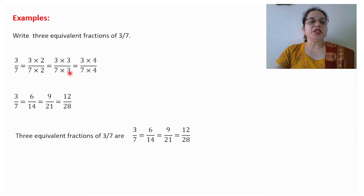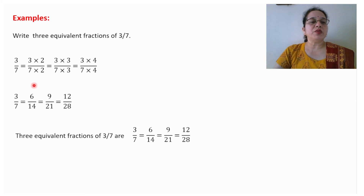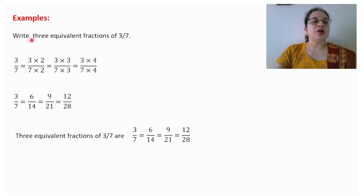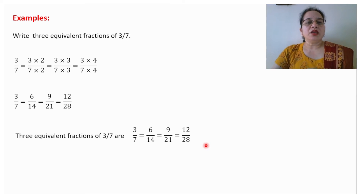Why are we multiplying by 3/3 and 4/4? Because 3/3 means 1, 4/4 means 1, 5/5 means 1, and if we multiply by 1 we get the same value. So to get equivalent fractions we multiply by 2/2, 3/3, 4/4, or 5/5 — depending on how many equivalent fractions you need to find. This gives us 6/14, then 9/21, then 12/28. These are the equivalent fractions of 3/7.